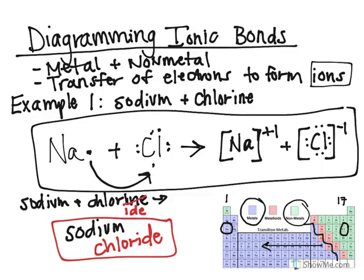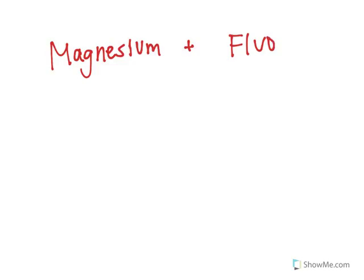So let's take a look at another example. Let's say that we have magnesium, and I want to bond magnesium with fluorine. So let's figure out how we're going to draw this.